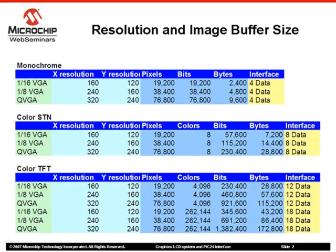The LCD color depth and resolution defines the requirement for the image buffer to store data being displayed. This slide shows some typical configurations and memory requirements. The formula to calculate memory requirement is X resolution in pixels multiplied by Y resolution in pixels multiplied by bytes per pixel. In the case of monochrome, a pixel has only 2 settings — on and off — requiring only 1 bit per pixel. For a 1/16th VGA resolution monochrome display, we need 160 x 120 x 1/8 bytes of image RAM, which translates to 2400 bytes of data RAM for one page of image buffer.